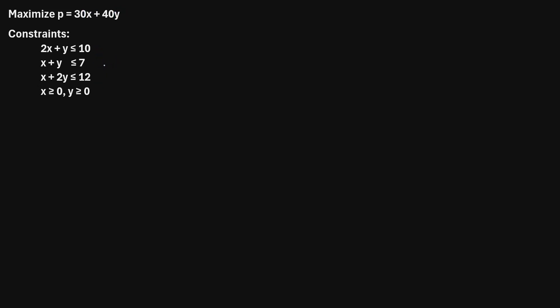To solve this using the simplex method, the very first step is we're going to rewrite these inequalities using equal signs, and we're going to introduce slack variables. For this particular example, there are three constraints, and this last condition where it says x is greater than 0 and y must be greater than 0 is known as non-negativity. So because we have three constraints, we need to introduce three slack variables. We rewrite the equations as 2x plus y, and we'll introduce our first slack variable s1, and we'll set that equal to 10.